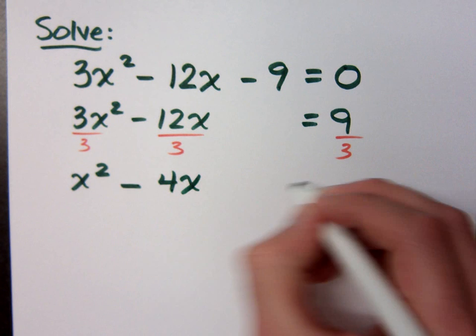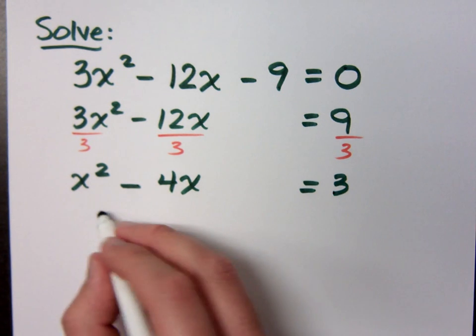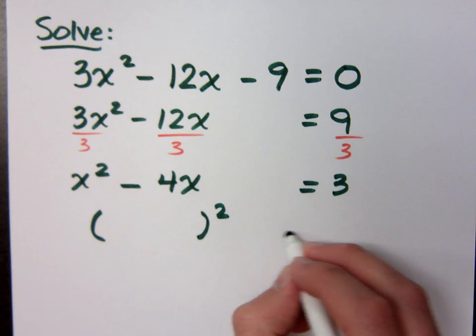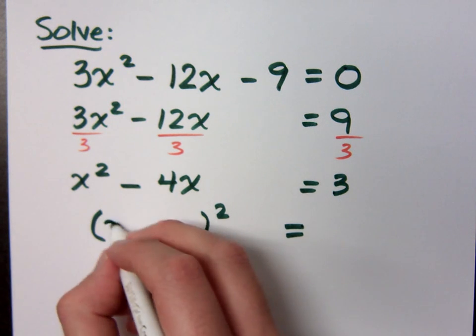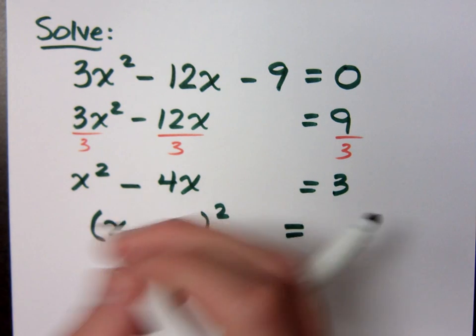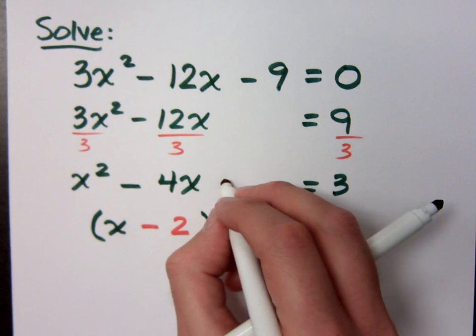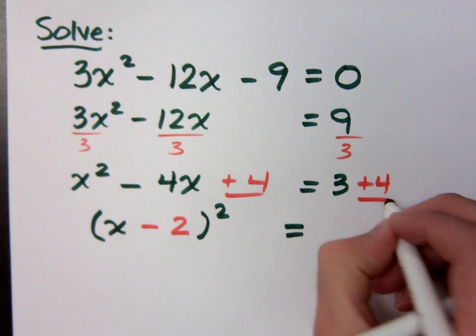So I have what now? x squared minus 4x is equal to 3. Now I know that I want to create something that will factor as a square. You need to tell me what that is. What's half of negative 4? Negative 2. What's negative 2 squared? It's a positive 4. So that's how we complete the square.